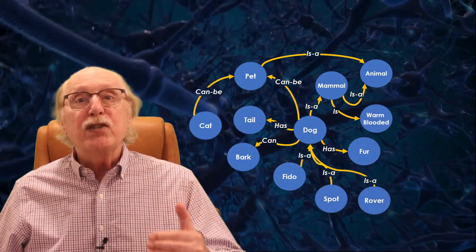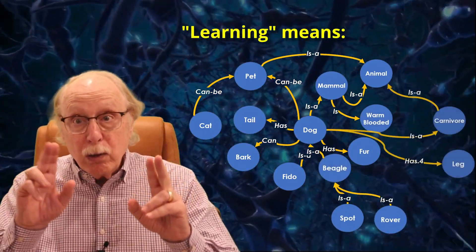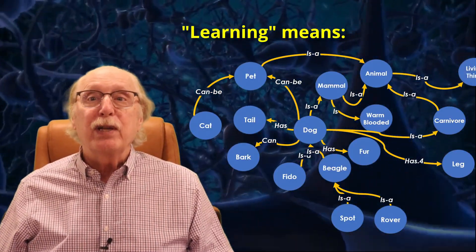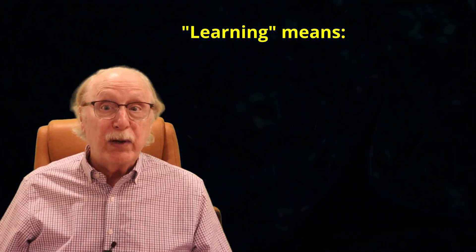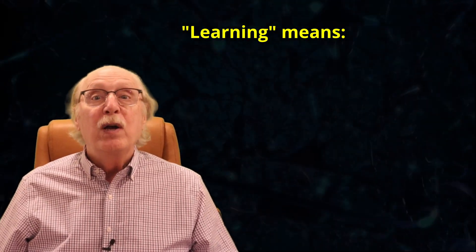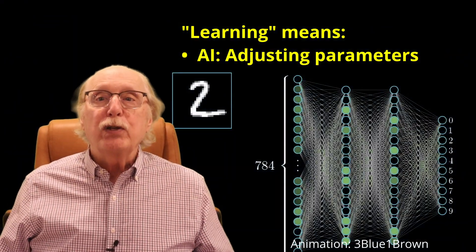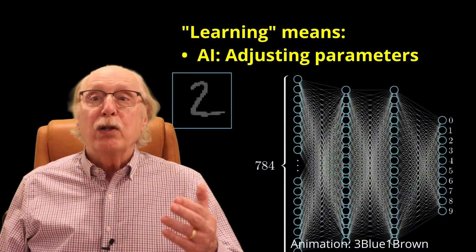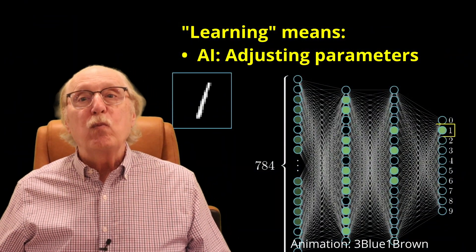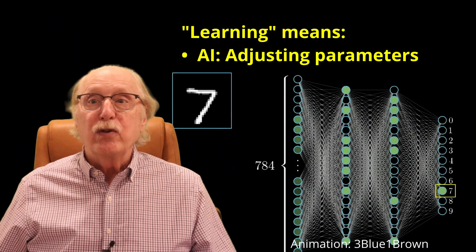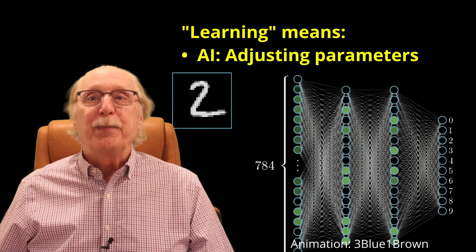The key is that the word 'learning' means very different things depending on whether we're talking about AI or people. For artificial intelligence, learning usually means adjusting weights inside a neural network model for a better fit to a dataset.